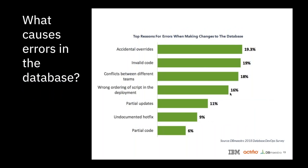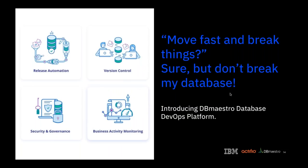If you really think about what can go wrong, this is what people are finding when doing database releases. They have problems around code overrides, invalid code going to the wrong environment, conflicts between different teams — a team issues a fix and the next team issues another fix that overrides it. And partial updates or partial code going into different environments — that's a challenge as well. There are a lot of challenges to database updates, and if you're running fast, that might be a bigger problem.